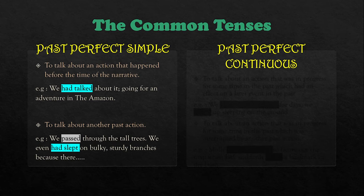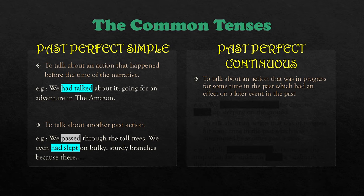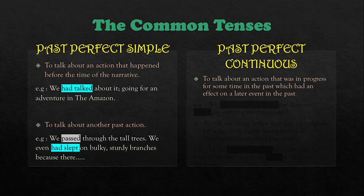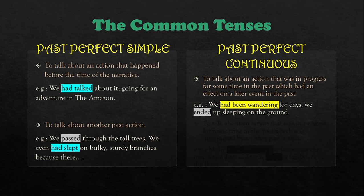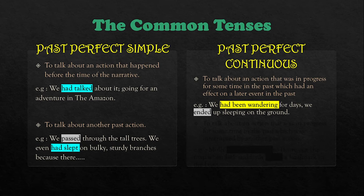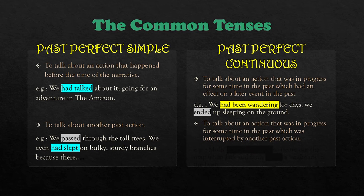Past perfect continuous is used to talk about an action that was in progress for some time in the past which had an effect on a later event — ada punca dan ada akibat, cause and effect. Example: 'We had been wandering for several days, we ended up sleeping on the ground.'